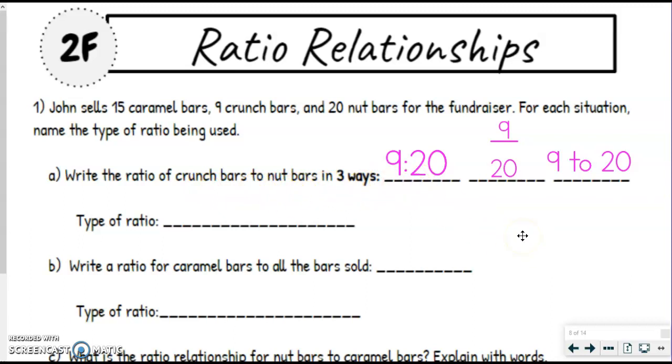By the way, if you want to pause the video and try the rest of these on your own, you're more than welcome to, except for part C, which is the new part. But if you want to just do them together, that's fine too. So moving forward, which type of ratio is this? Well, it's two different types of bars, so that's going to be a part-to-part.